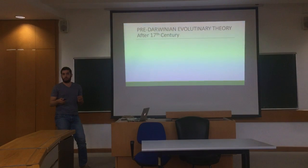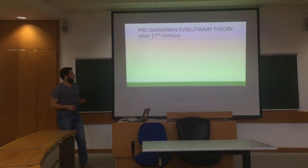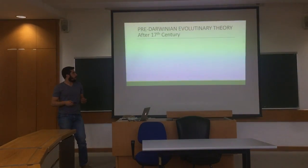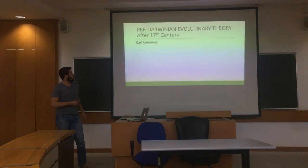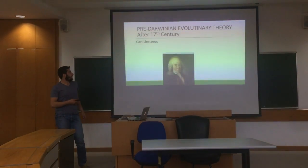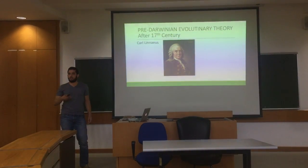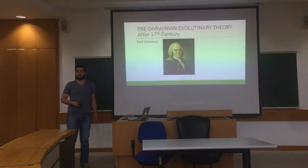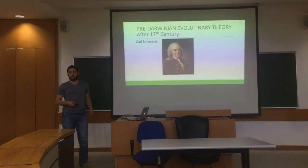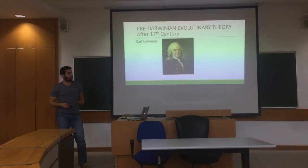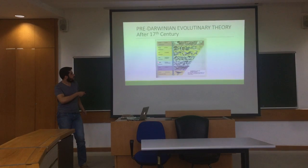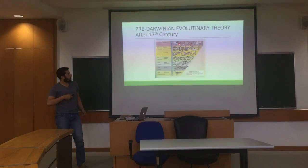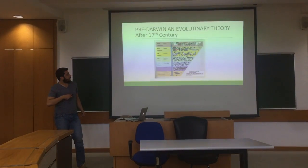I want to mention three scientists before Darwin. First of them is Swedish biologist Carl Linnaeus. He is important because he classified all living creatures into a well-organized hierarchy, from kingdom to species, ordering them from least similarities to most similarities.